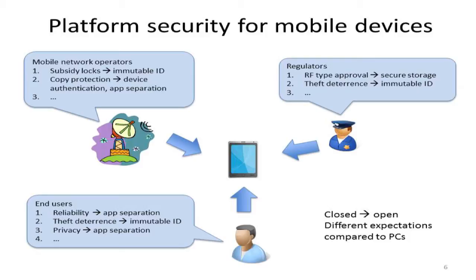Regulators are also interested in theft deterrents. Stealing large numbers of mobile devices and selling them in another country is a big business. One way to deter that is to uniquely identify every device so that when a device shows up in a network, it can be checked against a database of known stolen devices. Regulators therefore require that there must be an immutable identification for mobile devices.